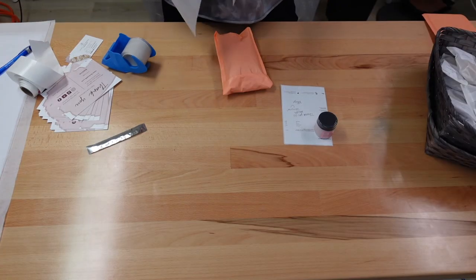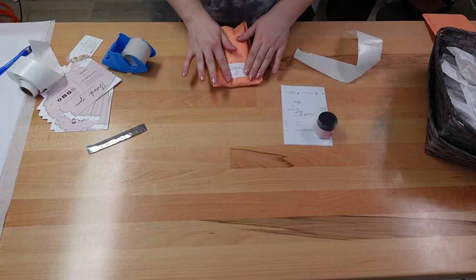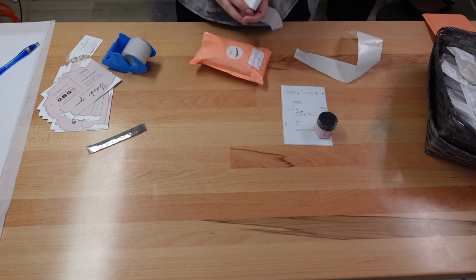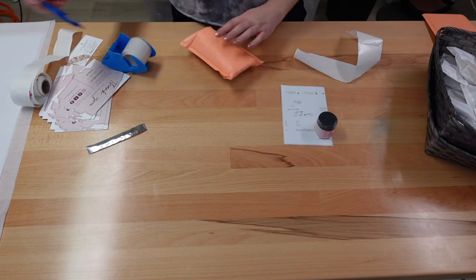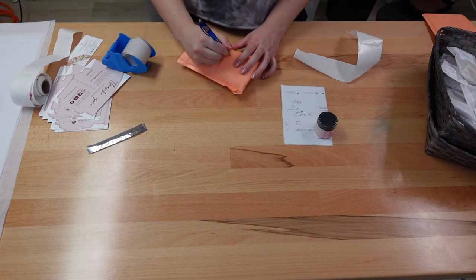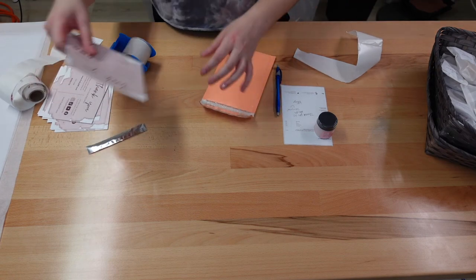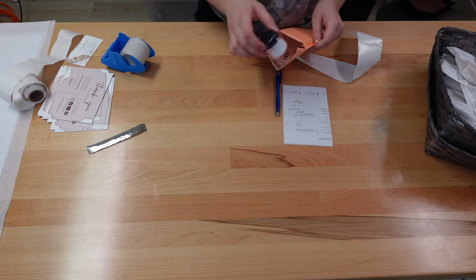And then we'll close this up. Seal it with our sticker and a thank you sticker. And then I'll write her name on here. This was Mia's. And we'll move on to Genstein's. And we'll just do the same thing. She also ordered a strawberry daiquiri.